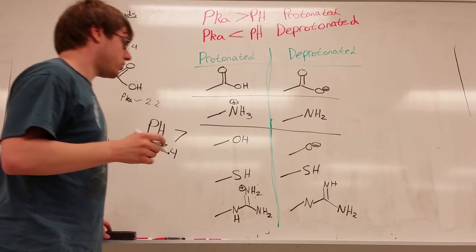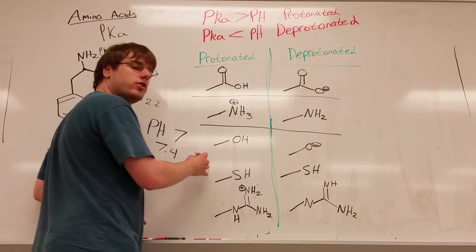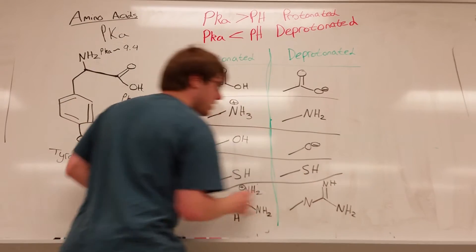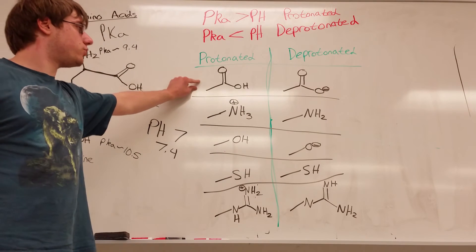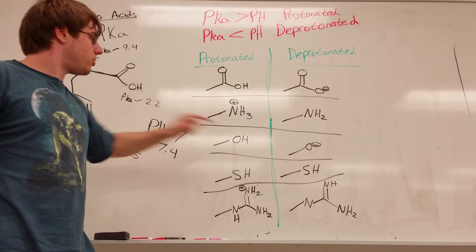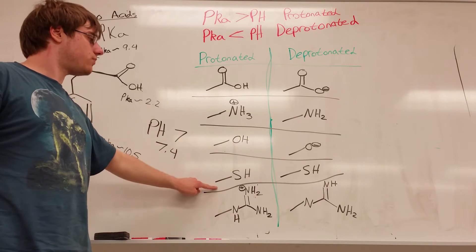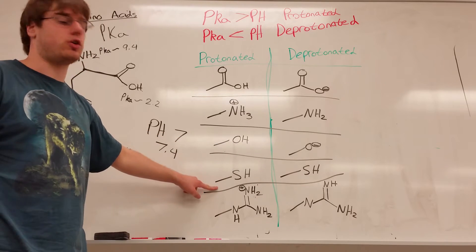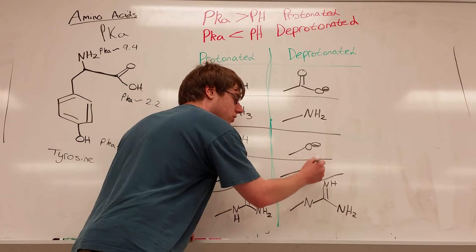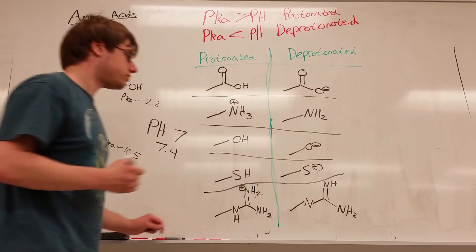And then two other common groups are OHs, which will be on your side chains, and SHs, which would be on your side chains. And both of these are very comparable to the rules we just gave for the carboxylic acid. OH or SH in their protonated form are just OH or SH, not SH2 or OH2. And in their deprotonated form it's O minus or S minus.